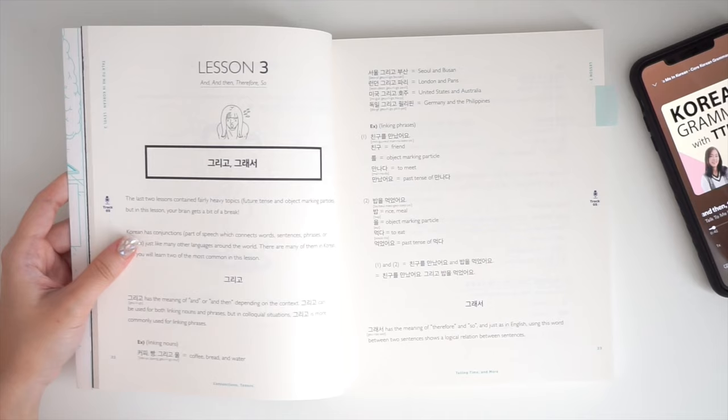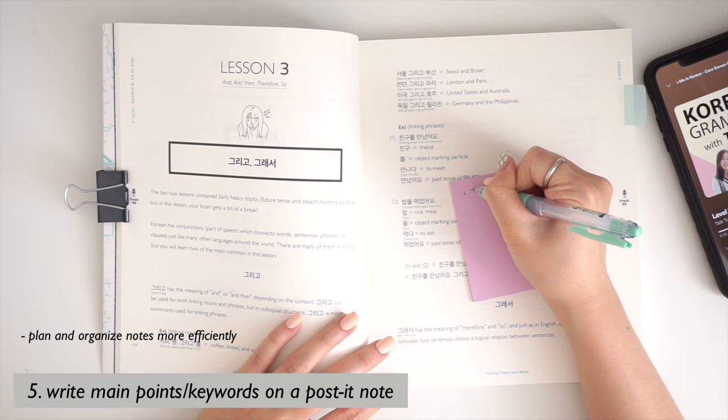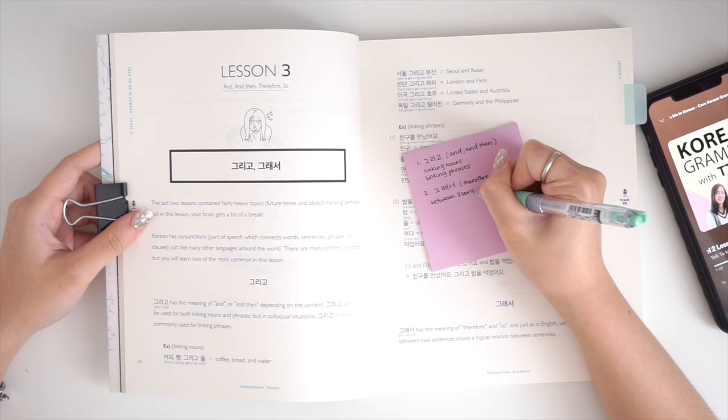For longer and more complicated lessons, I like to write down keywords and main points on a notepad or a post-it note to help planning and organizing my notes more efficiently. This will also act as a checklist for later when I finish taking notes to make sure I've included all the topics that need to be covered.